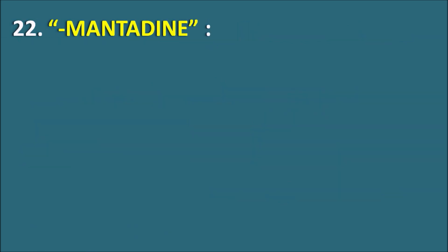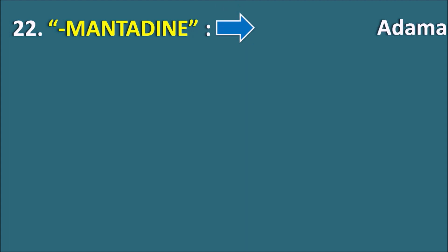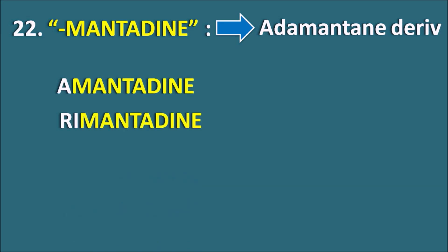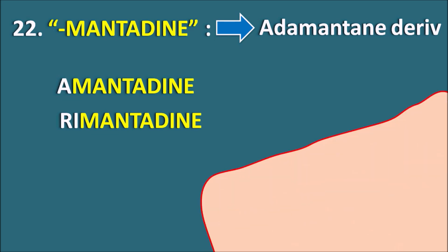The 22nd suffix is Mantidine. Mantidine indicates the drugs are adamantane derivatives. We have two drugs: Amantadine and Rimantadine. These two drugs can be used as antiviral agents, particularly in the treatment of influenza A. Let us see how they act.